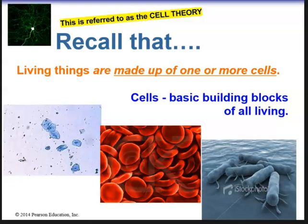First, all living things are composed of one or more cells. Second, the cell is the basic unit of life — the basic building block of all living things. Third, all new cells arise from existing cells; they don't spontaneously come into existence. This is referred to as the cell theory, or the unified cell theory.